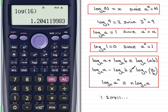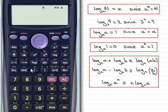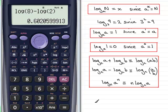Now, to verify the second rule, let's remove that. Suppose we had the log of 8 minus the log of 2. Let's see what that equals. 0.60205 and so on.